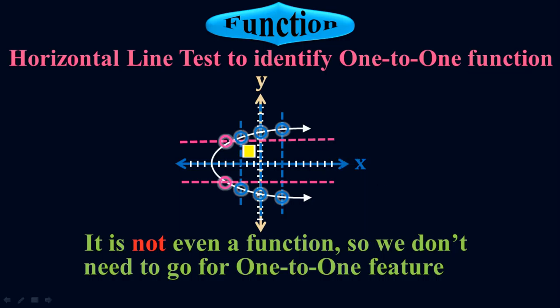Look — all the vertical lines pass through two points: this one here and there, the middle one here and there, and the third one here and then here. Since it is not even a function, I don't need to go for the one-to-one feature. That is why we do the vertical line test first. The one-to-one feature comes later.